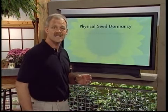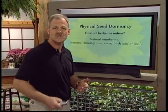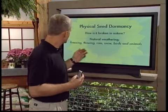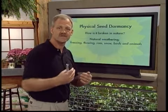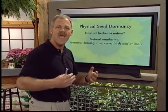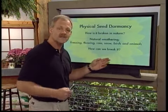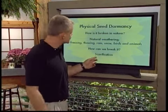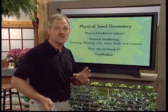How is physical dormancy broken in nature? These seeds go through a natural weathering period — freezing, thawing, rain, snow. Even birds and mammals will ingest fruits containing these seeds, and running through their digestive system compromises the seed coat. This natural weathering causes the seed coat to be compromised and the seed germinates. How do we do it at home? It's a process called scarification.